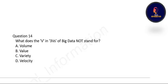Question 13: What does the V in the three V's of big data NOT stand for — volume, value, variety, or velocity? Volume, variety, and velocity are the three V's, but value is not among them. Option B is correct.